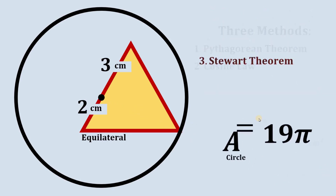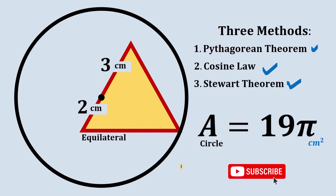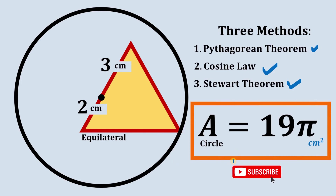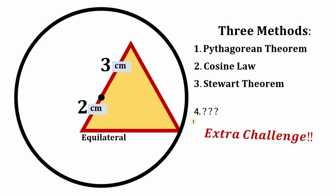Therefore, using three different methods, the area of the circle is 19π square centimeters. Before we end this video, let's have an extra challenge: find another solution to solve for the area of this circle. Because more solutions, more fun! I will read your answer in the comment section down below. And as always, we are done.